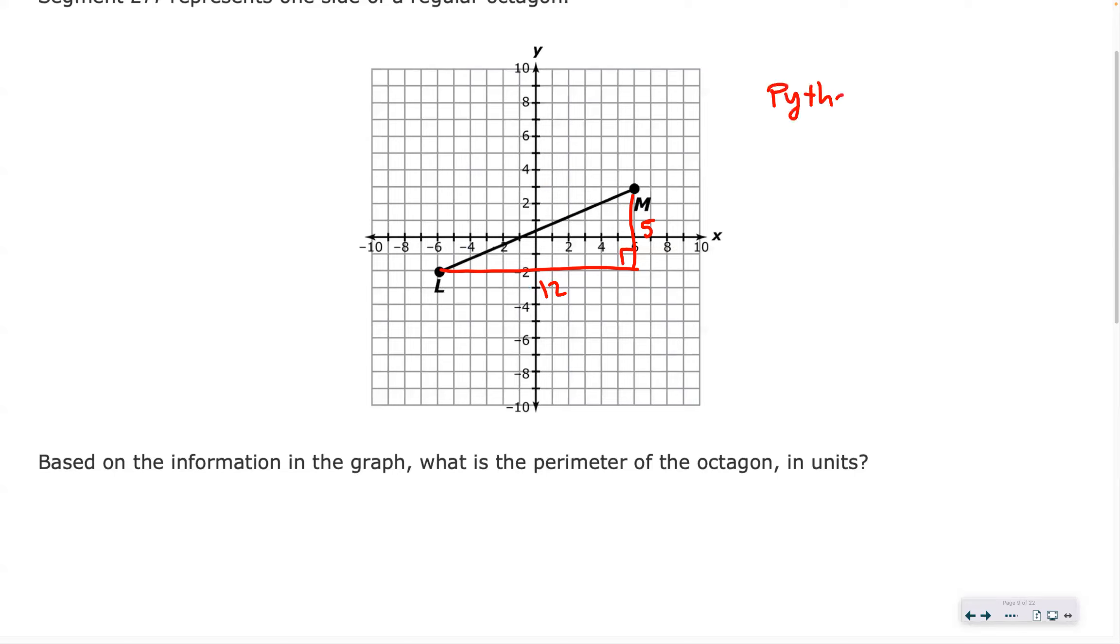Pythagorean theorem. So that's 25 and that's 144. It's a Pythagorean triple. But in case you did not realize it, what are we missing? A squared, B squared, or C squared? C squared. So we'll say 5 squared plus 12 squared equals C squared, the length of one edge of the octagon.